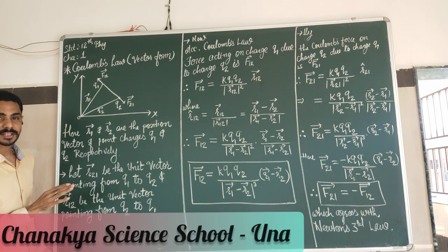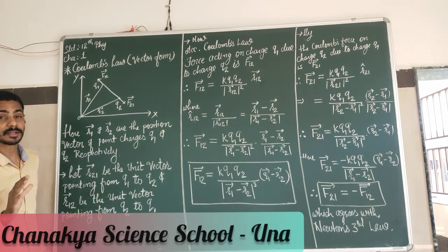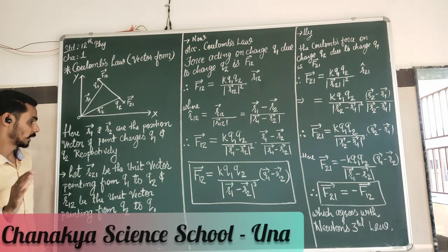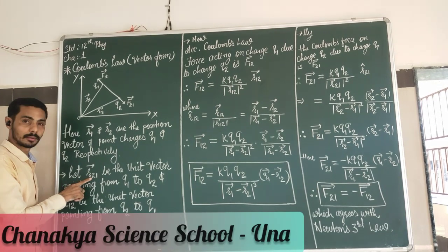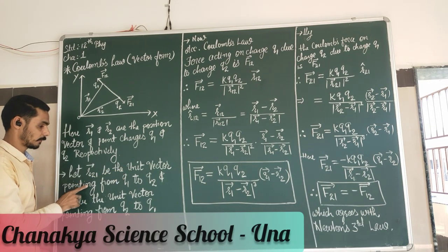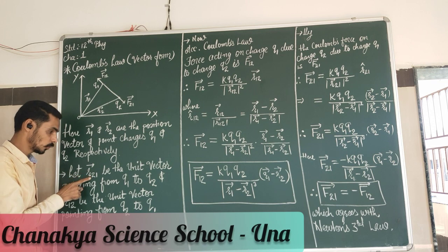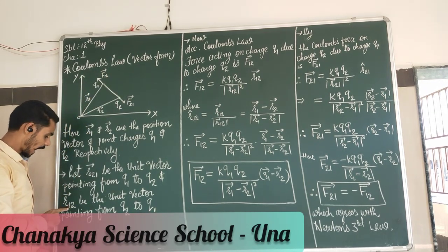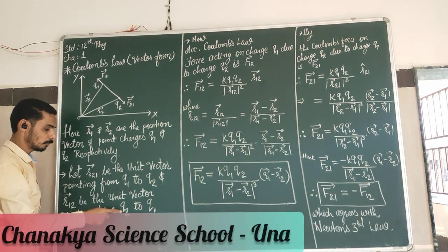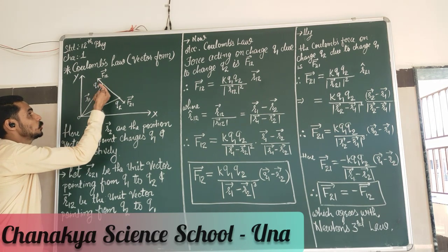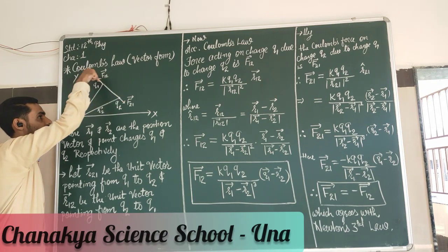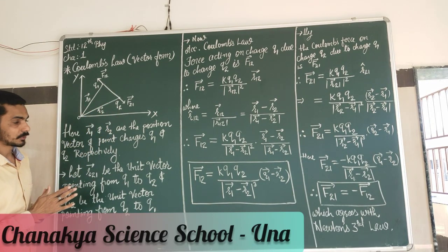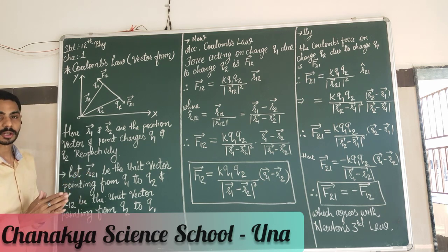Moving ahead, most importantly, as I said, this is a vector quantity. So for a vector quantity, I have to properly select the direction. If there is an error in direction, your answer value may be right but the particular direction will be wrong. So R21 is the unit vector pointing from Q1 to Q2, and R12 is the unit vector pointing from Q2 to Q1. So R12 points in one direction and R21 points in the other direction.